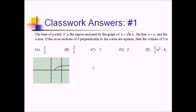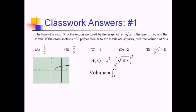For squares in general, we can write A of x equals s squared. But the side of the square is going to be the distance between our function and the axis, which is just the square root of ln of x. So I've got square root of ln of x, squared. Now I'm going to put all this together with an integral — the volume is going to be the integral from 1 to e of this A of x.